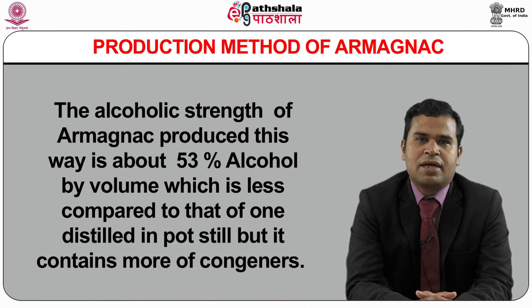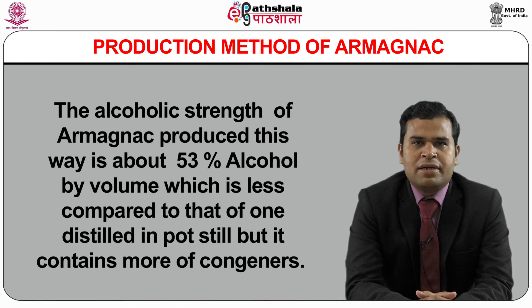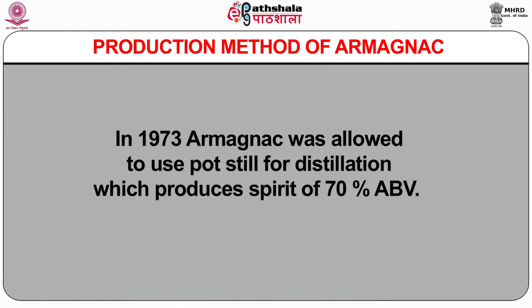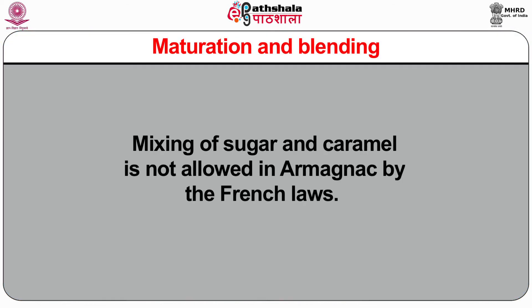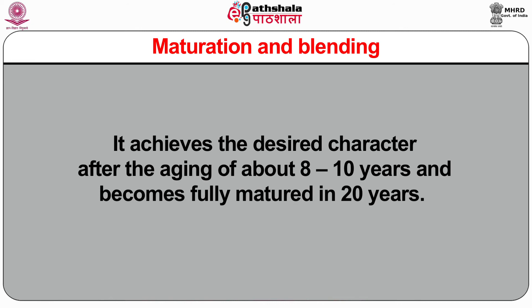This is less compared to that distilled in a pot still, but it contains more congeners. In 1972, Armagnac was allowed to use pot still for distillation, which produces a spirit of about 70% alcohol by volume. For maturation and blending, Armagnac is matured in charred Monlezun oak. The wood is rich in tannin, which imparts flavour and colour to the Armagnac and also makes it mature early. The unique distillation leaves more congeners and earthy aroma to the brandy. Mixing of sugar and caramel is not allowed in Armagnac according to French laws. It achieves the desired character after ageing of about 8 to 10 years and becomes fully matured in 20 years.